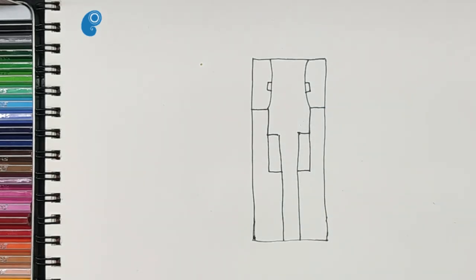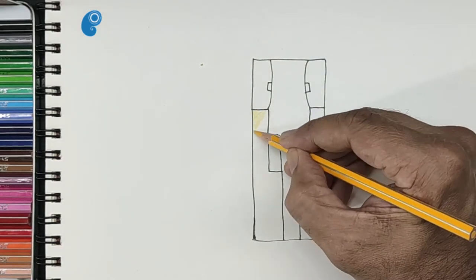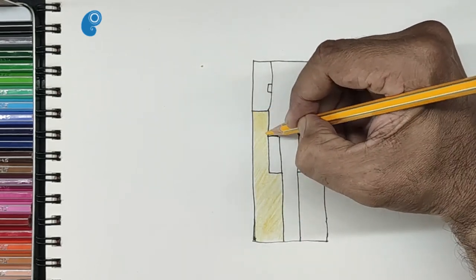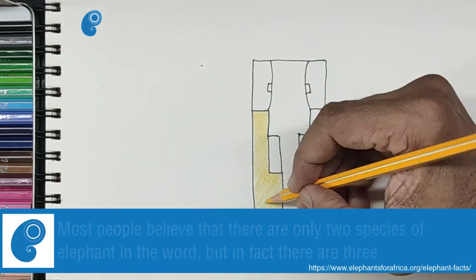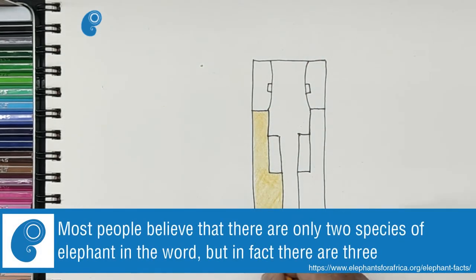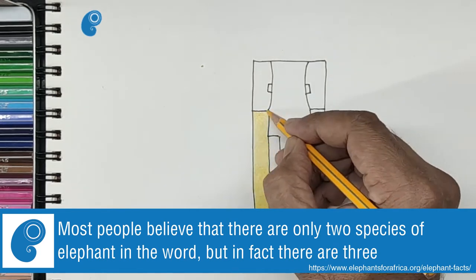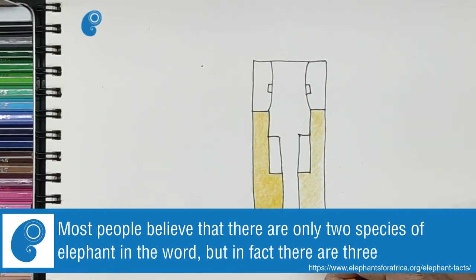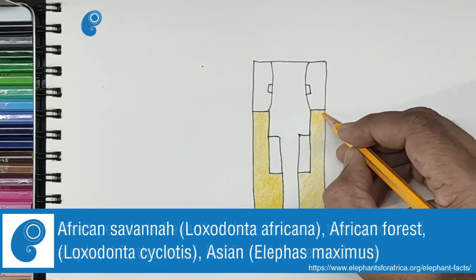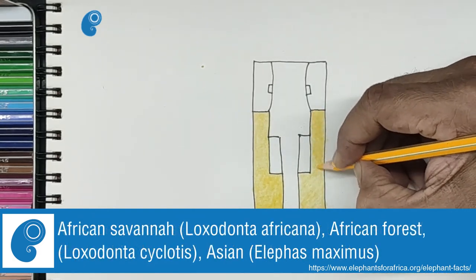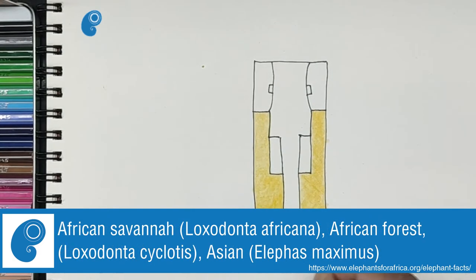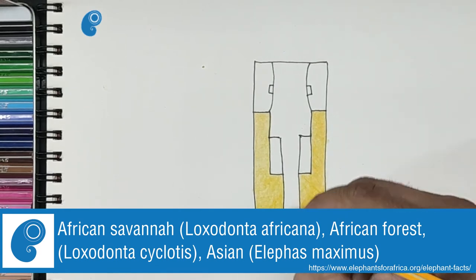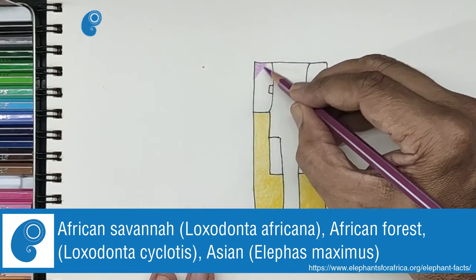Let us color him. We will use yellow to color blocky's legs. Let us color his ears purple.